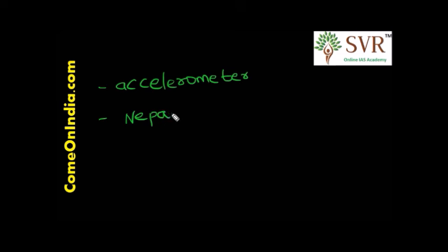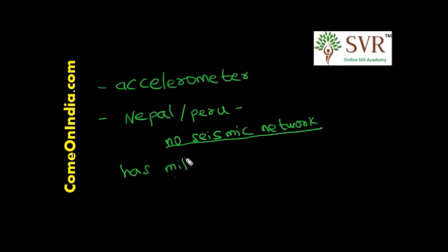For example, Nepal and Peru have not a developed network. Nepal is more prone to earthquake but it has almost no seismic network or least infrastructure in relation to earthquake warning. So, if MyShake App is used properly, we can save a lot of lives and damage to property.